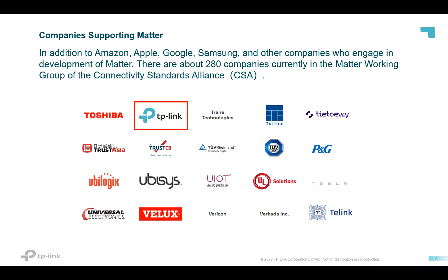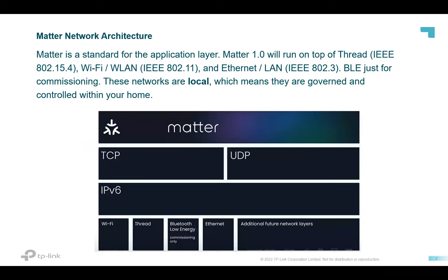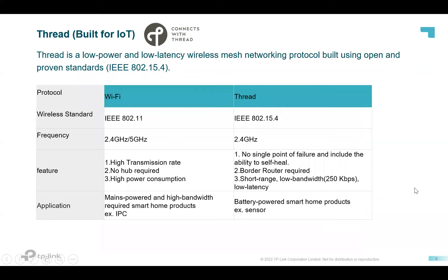Let's talk about the Matter protocol — Matter 1.0. Matter 1.0 will run on top of Thread, Wi-Fi, and Ethernet. These networks are local, meaning they are governed and controlled within your home. You may be familiar with Wi-Fi and Ethernet, but Thread is a newer protocol raised in recent years.